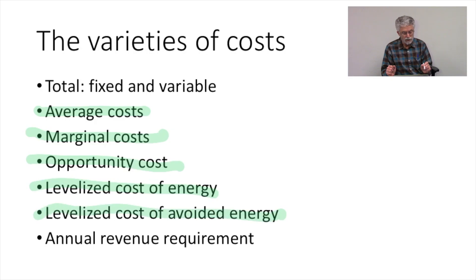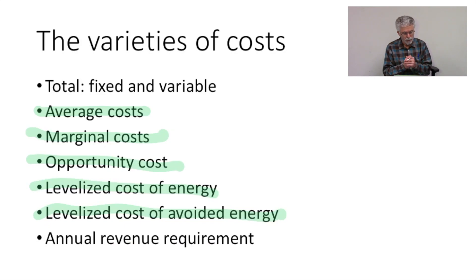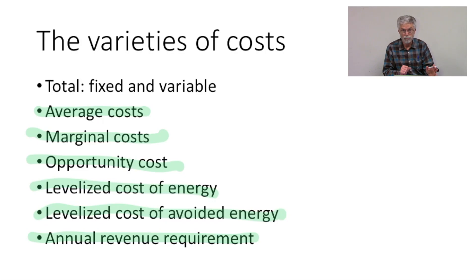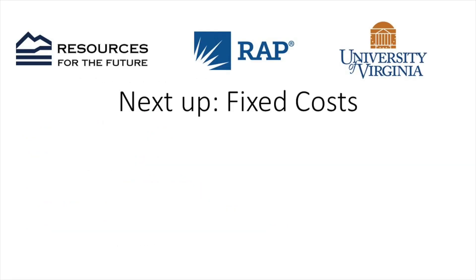We're going to talk about the levelized cost of avoided energy — in the long run, what are we not having to do if we build this power plant. And finally, another way of thinking about long-run costs of operating a power plant are the annual revenue requirements: what a power plant has to earn in order to break even in a given year. We'll see you next time.